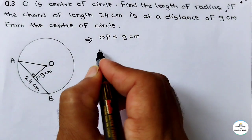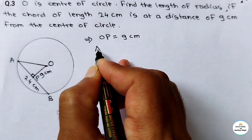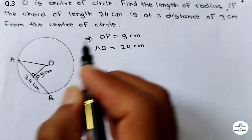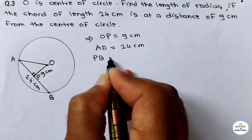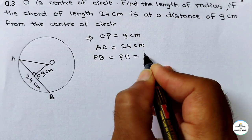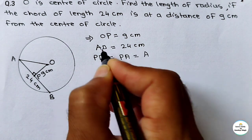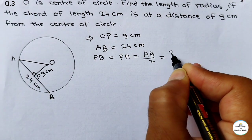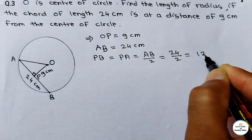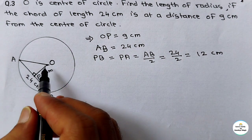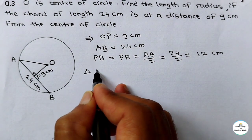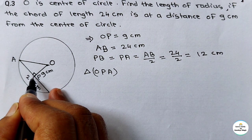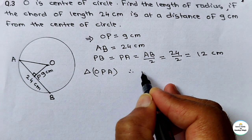As per the property, chord AB length is 24 cm. PB equals PA equals AB divided by 2, which equals 24 divided by 2, giving 12 cm. Now just consider triangle OPA, where angle P is the right angle. So we can use Pythagoras theorem.